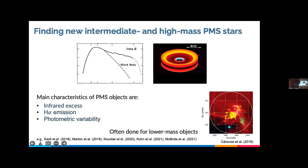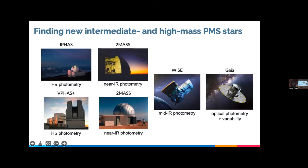This approach has been used for lower mass objects with relative success, but it has proven harder for more massive objects which are much lower in number. To trace those characteristics, we used surveys from very different telescopes: for the H-alpha line we used IPHAS and VPHAS+, two H-alpha surveys in the northern and southern hemispheres respectively; for near-infrared excess we used 2MASS; for mid-infrared excess we used WISE, going up to 22 microns; and for optical photometry we used Gaia, which also allowed us to study photometric variability.